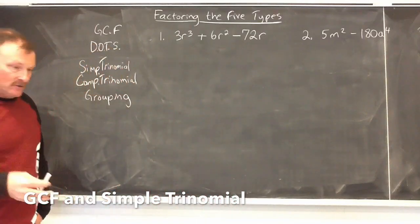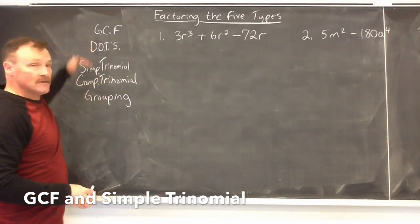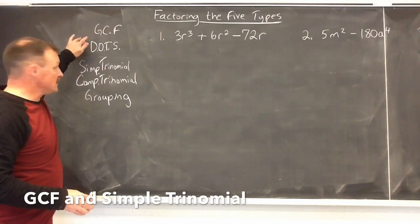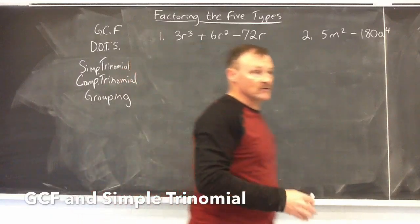The way we do this is to first take a look at the question. You always look for GCF first, and then based on the number of terms: two terms you look for DOTS, if there's three terms we look for the trinomials, and if there's four terms you can try the grouping.